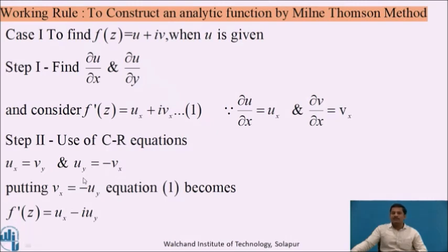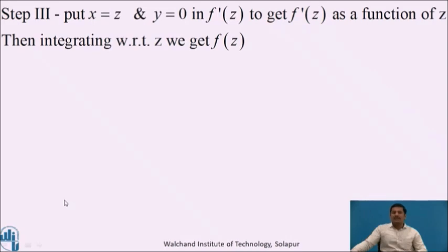Since we want to replace vx, the second CR equation is useful: vx = −uy. After substituting vx = −uy into equation 1, we get f'(z) = ux − i·uy. Now all quantities on the right-hand side are known. To convert the right-hand side to a function of z only, we substitute x = z and y = 0. After making this substitution we get the right-hand side as a function of z, and by simple integration we obtain the required analytic function f(z).